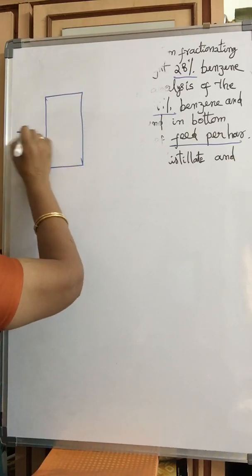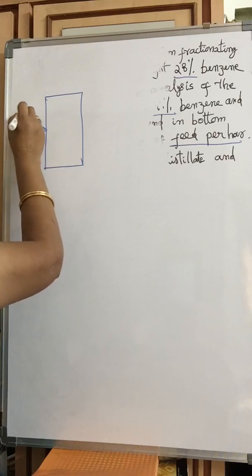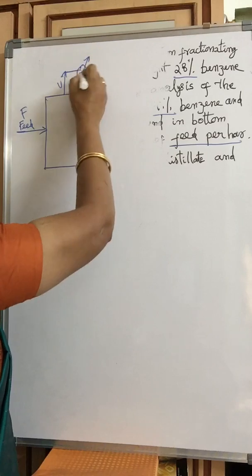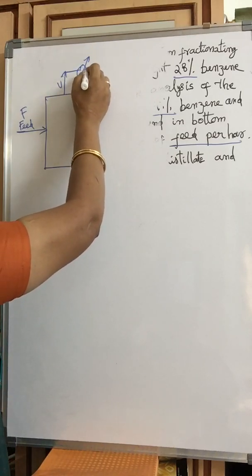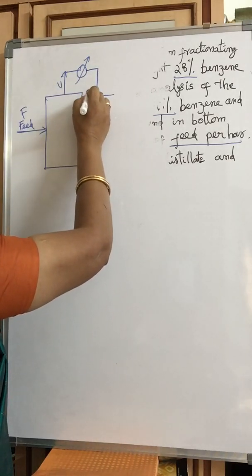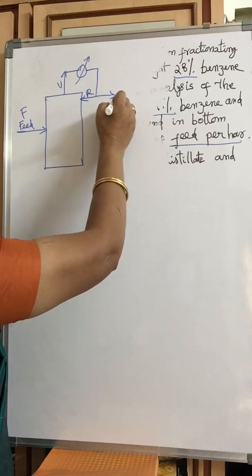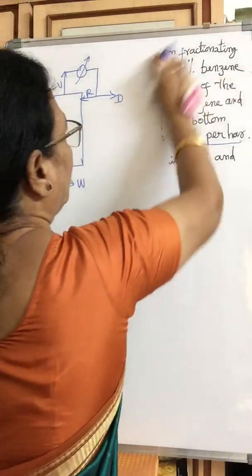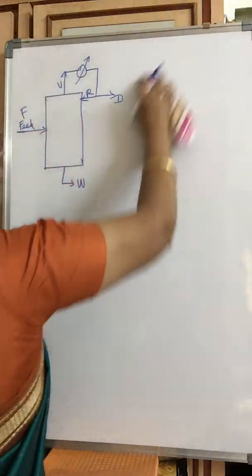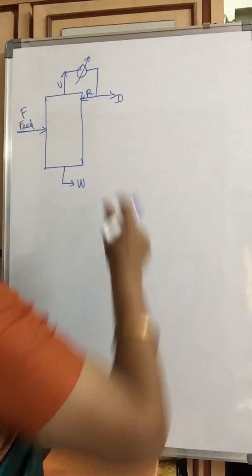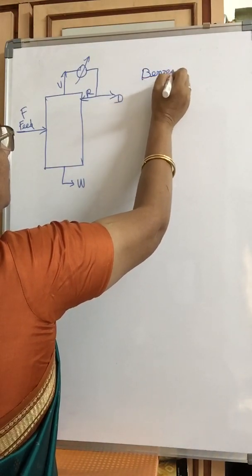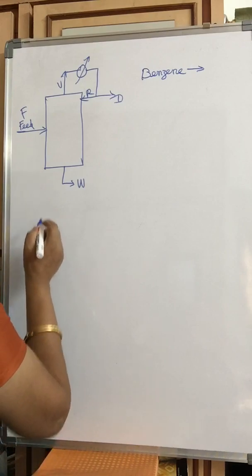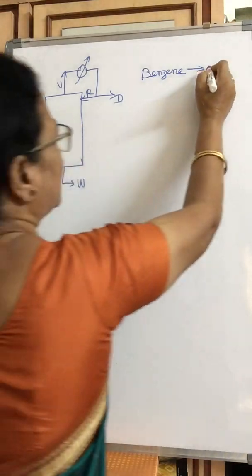We shall draw a distillation column. Feed enters the distillation column. Vapors are formed and passed into the condenser. From the condenser, the product is taken — part is refluxed and the remaining is withdrawn as a distillate product. The bottom product is W. This problem contains two components: benzene and toluene.